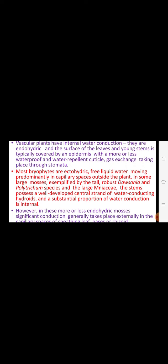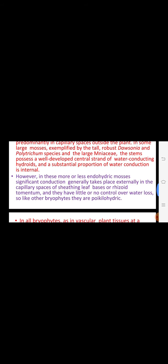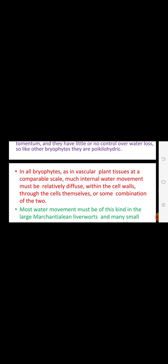Members of the family Mniaceae — Mnium being one genus — have water-conducting hydroids and a substantial proportion of water conduction through internal development, functioning like xylem tissue. Endohydric mosses have internal conduction, and externally capillaries are present. Sheathing leaf bases or rhizoidal tomentum — the enlarged part at the basal portion of the rhizoid — help control water loss. This condition is called poikilohydric.